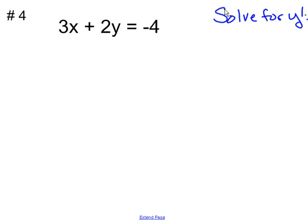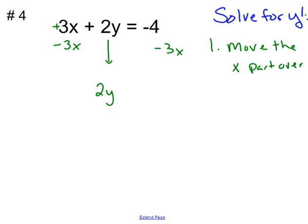So the first step you need to do to solve for y is move the x over. I look at it and say, okay, well, that's a positive 3. So to move it over, I have to subtract it. I carry down the 2y, and I subtract negative 4 minus 3x. Now, there's nothing you can really do with that because they're not like terms. So you just leave it negative 4 minus 3x.